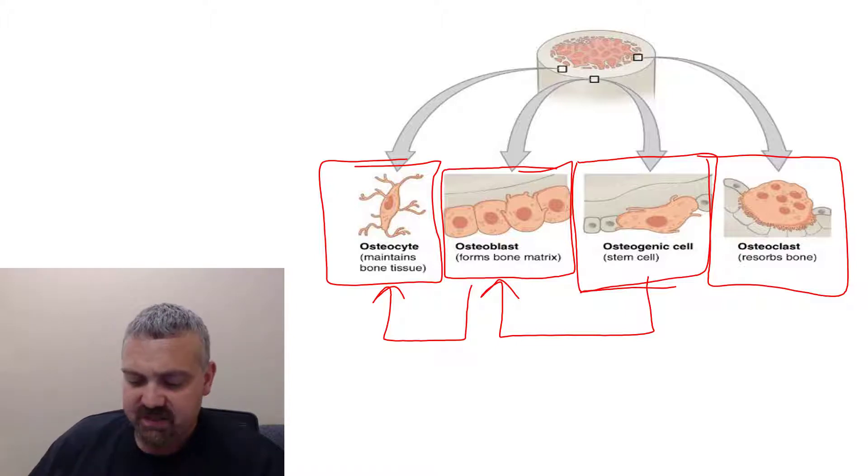And these cells, their job is to break down bone. So whereas an osteoblast builds up new bone, an osteoclast will break it down. It has enzymes like collagenase to break down proteins, and it also has acids. So this cell spews acids, spews enzymes to break bone down.